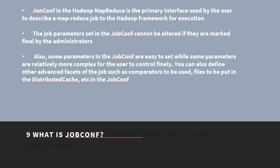What is JobConf? JobConf is the Hadoop MapReduce primary interface used by the user to describe a MapReduce job to the Hadoop framework for execution. Job parameters set in the JobConf cannot be altered if they are marked final by the administrator. Some parameters in the JobConf are easy to set while others are relatively more complex for the user to control finely. You can also define advanced facets of jobs such as comparators to be used and files to be put in the distributed cache in the JobConf.